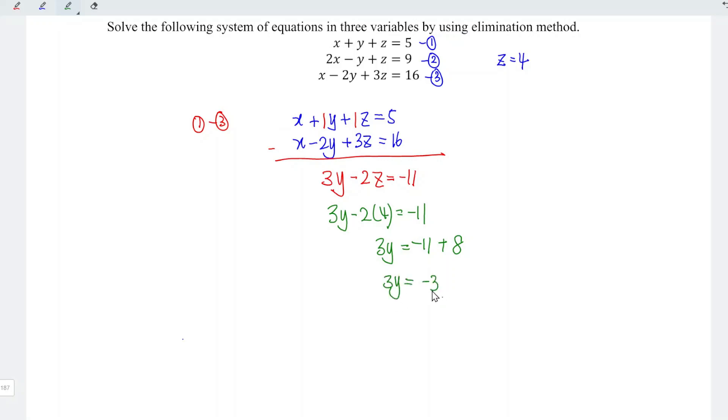So 3y is equal to negative 3. And now we can divide the entire equation by 3. So which means that y is equal to negative 1.